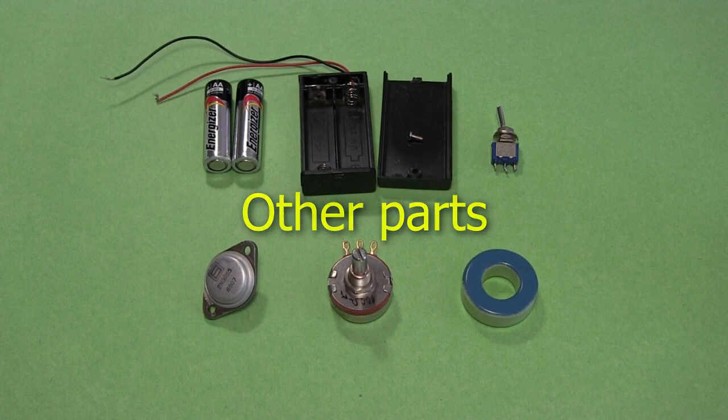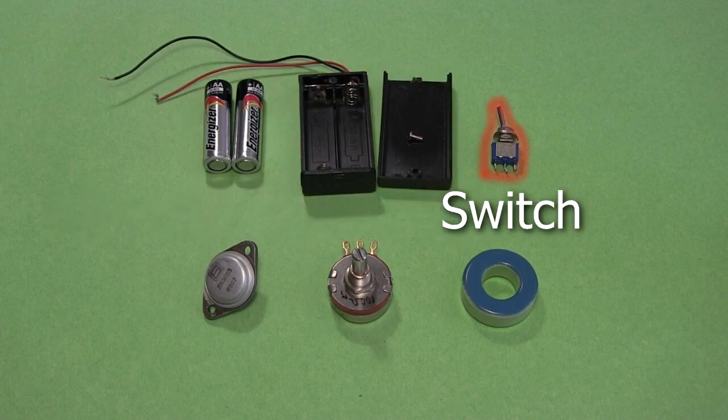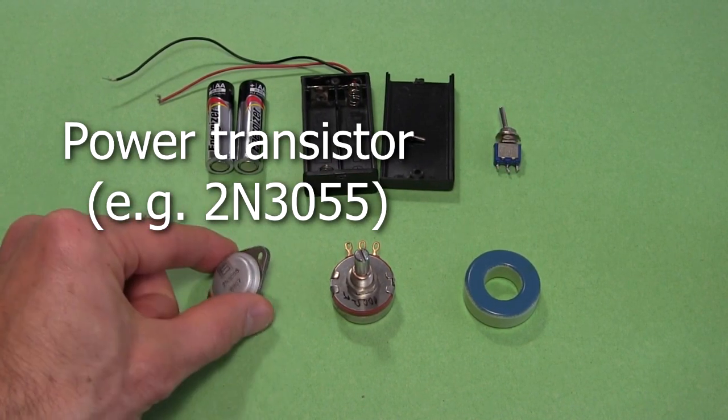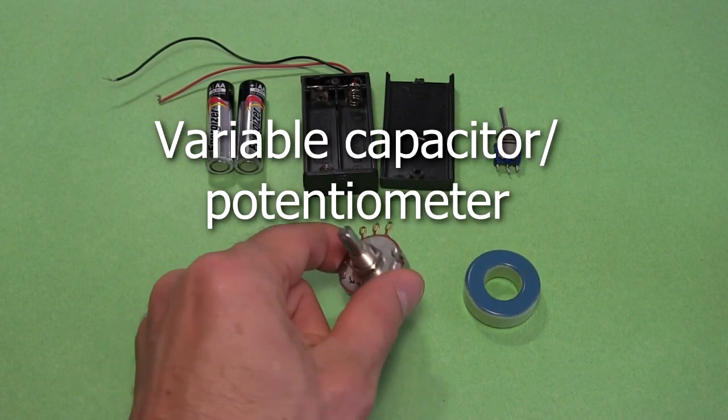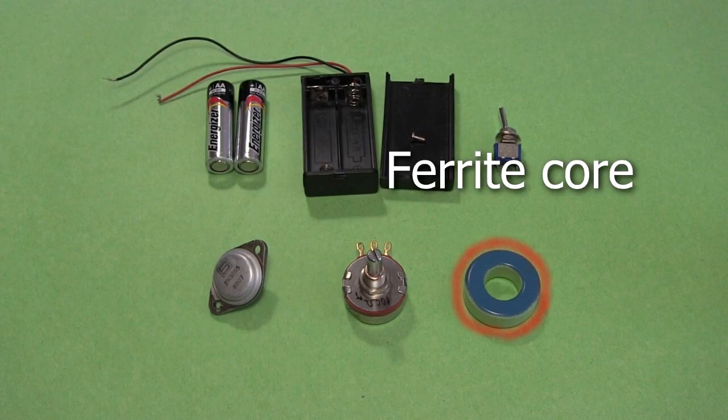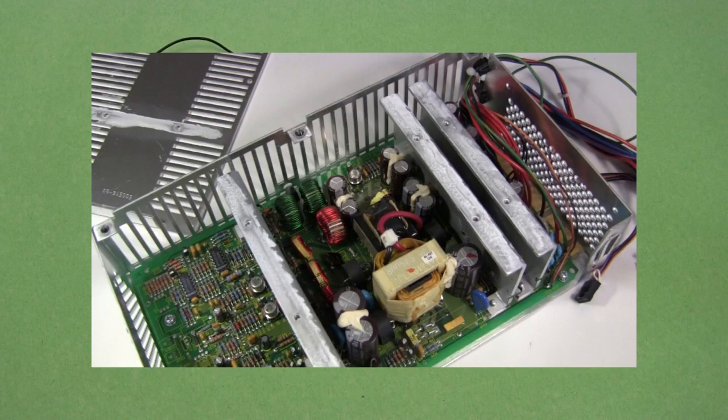You don't need a lot of other parts. Two 1.5 volt AA batteries and a battery holder, a switch for convenience, a power transistor like this 2N3055 transistor, a variable resistor or potentiometer. Mine is 100 ohms, which is probably a little bigger than is needed, though bigger will work too. A ferrite core, I've salvaged mine from this piece of hardware which I think is a power supply.